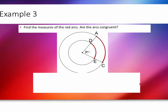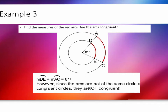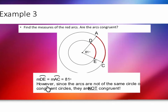Here's example three. Find the measures of arc DE and arc AC — are the arcs congruent? Notice we're dealing with concentric circles — a circle within another circle. Arc DE equals 81 degrees because it's a central angle. It's the same central angle for the larger circle, so arc AC also has a measurement of 81 degrees. However, since the arcs are not in the same circle and not in congruent circles, they are not congruent themselves.